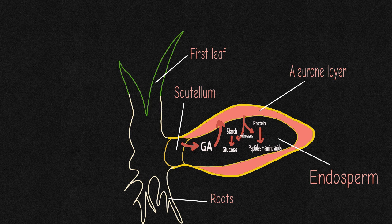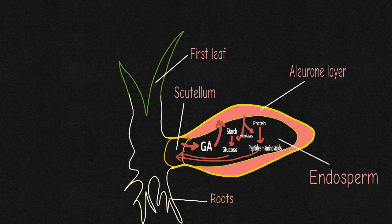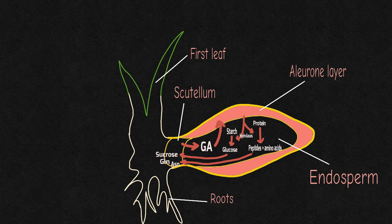The hydrolytic products are absorbed by the scutellum, which is part of the growing embryo. There, glucose is converted to sucrose, and the products of protein mobilization are converted to amino acids glutamine and asparagine.